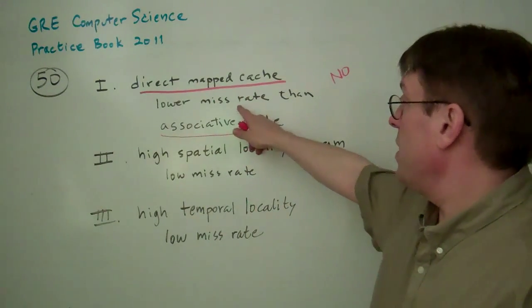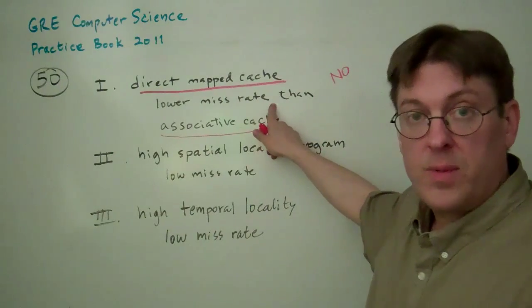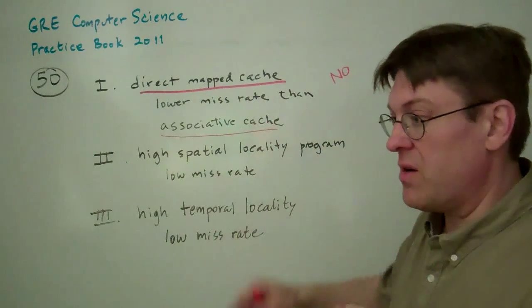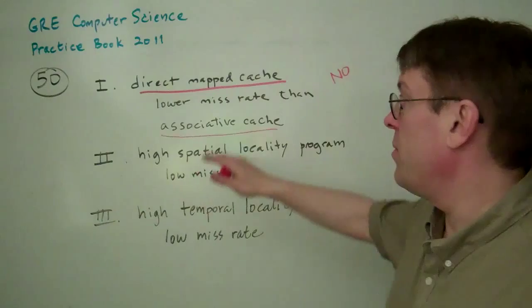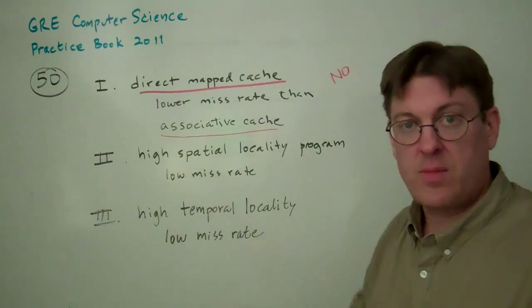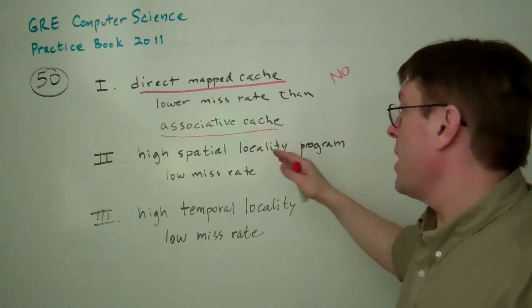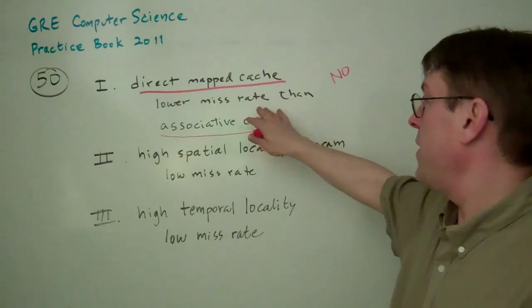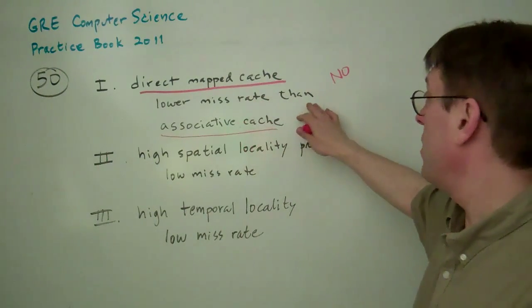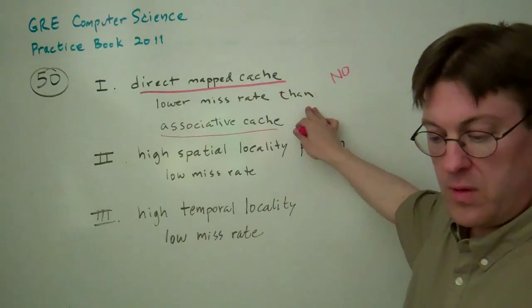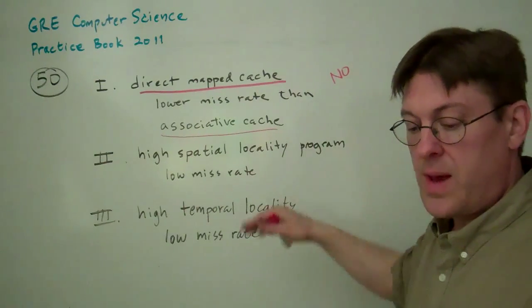But you might have, the problem is you may have more misses because the cache is not there. Because pieces of main memory may map to the same location. So I guess, I don't know how that would be possible. I don't understand that one. To me, this would be definitely a no. The associative solution will always be better than direct mapped.